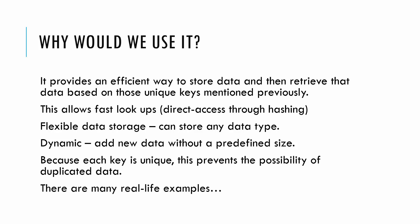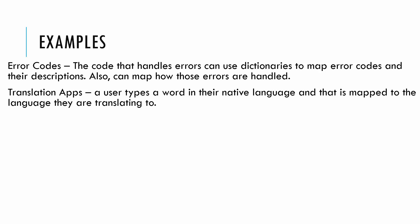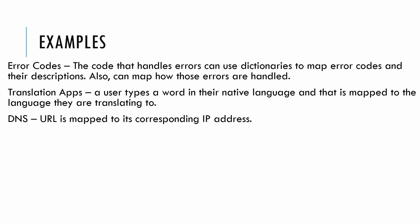There are many real-life examples. Error codes: error-handling code can use dictionaries to map error codes to their descriptions and how those errors are handled. Translation maps: a user types a word in their native language and that key is mapped to the foreign language word they're translating to. The domain name system server: the URL is mapped to its corresponding IP address using a fast dictionary lookup via a hashing function.